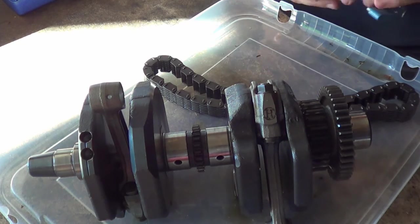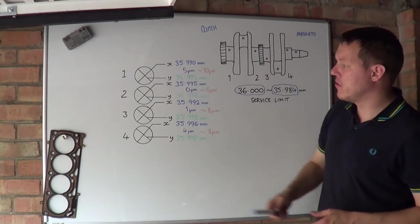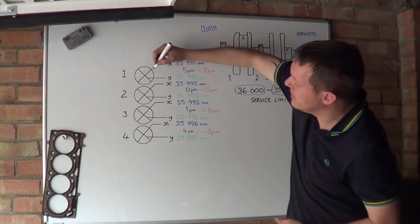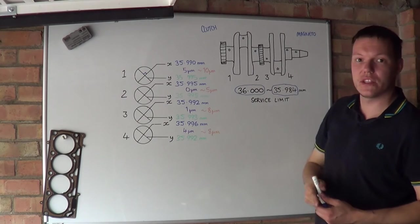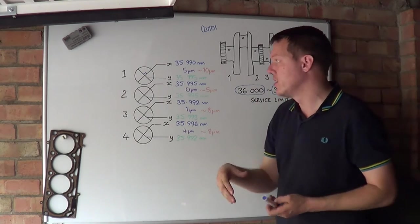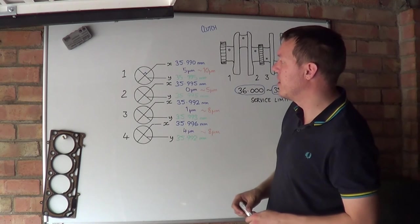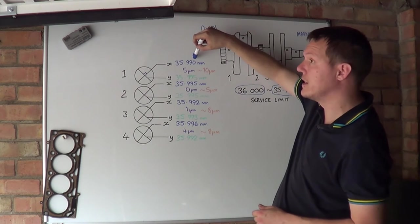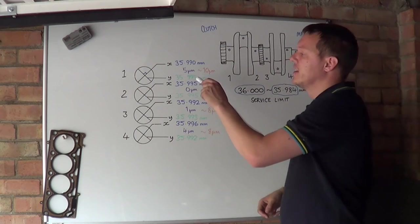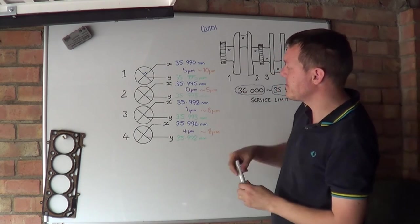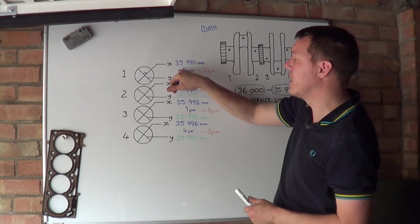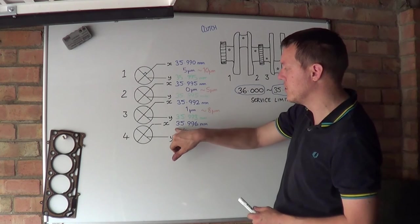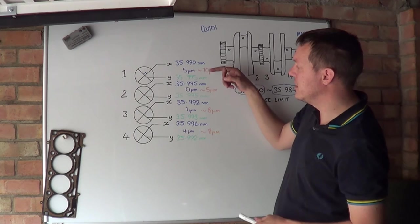What I've got here is I've got all four of my journals drawn out like this and then we've got the X and the Y measurement all 90 degrees to each other, so they're all perpendicular so you get a nice idea of the roundness of the eccentricity of the journal. In between each measurement I have written down the difference between the two: there's five microns difference between this one, zero on this one, one on this one, and four on this one.